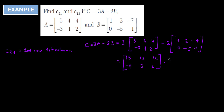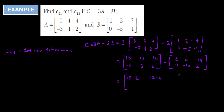Now for −2B: I multiply matrix B = [1, 2, −7 / 0, −5, 1] by 2 first, keeping the minus sign separate. 2×1=2, 2×2=4, 2×(−7)=−14, 2×0=0, 2×(−5)=−10, 2×1=2. So 2B = [2, 4, −14 / 0, −10, 2]. Now subtracting entry by entry: 15−2, 12−4, 12−(−14), −9−0, 3−(−10), 6−2.